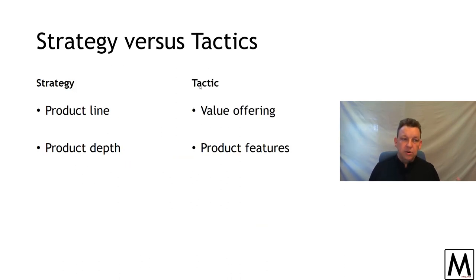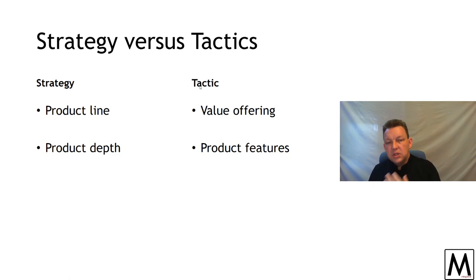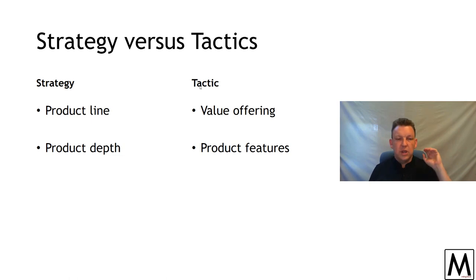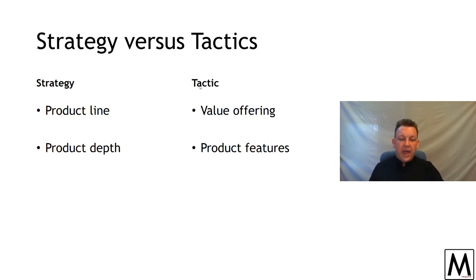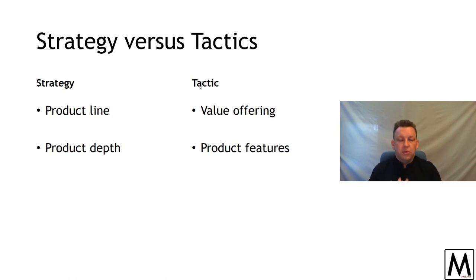Product begets strategy, and obviously strategy will dictate products, but tactics and products are also closely aligned. A strategy is the number of products you have available across your organization and the number of variants on a theme within those products. Those are strategic decisions, but they are also driven by market segmentation, benefit segmentation, and understanding how many variants your market will tolerate. Each product you put into the lineup is in itself a segmentation variable.